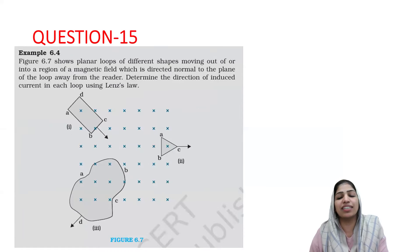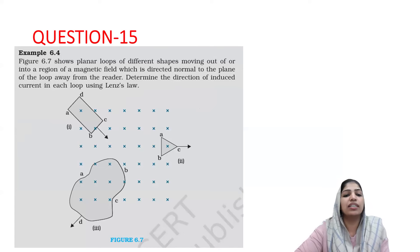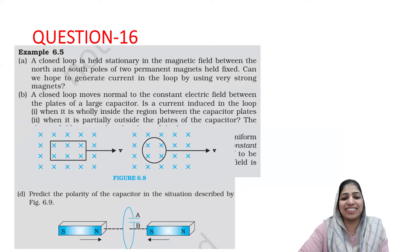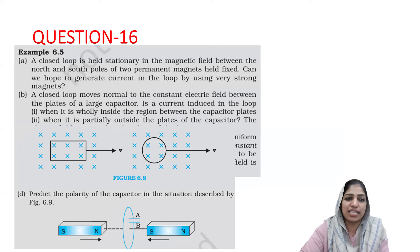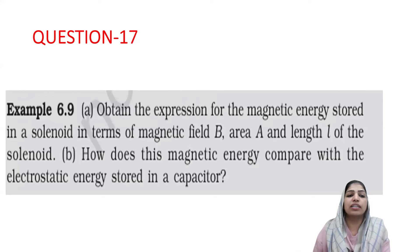Question number 15 is from electromagnetic induction. EMI Example 6.5 covers induced current direction and polarity of the capacitor — this question has a high repeat value. Example 6.9 is the derivation for magnetic energy stored in a solenoid.